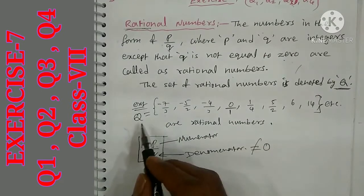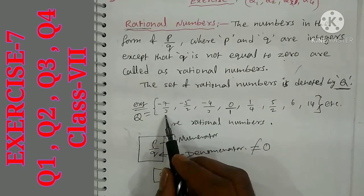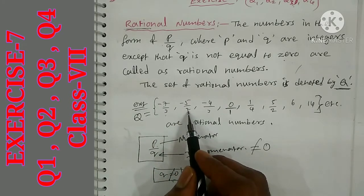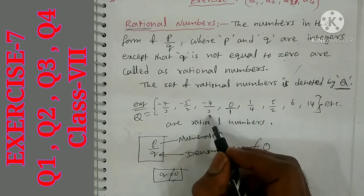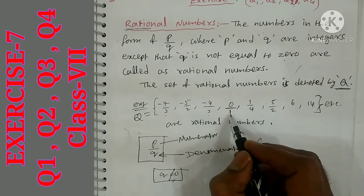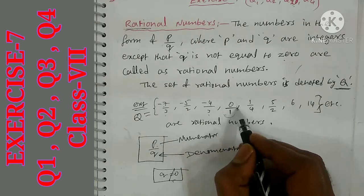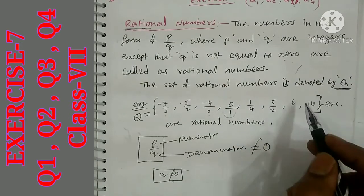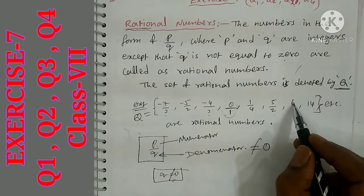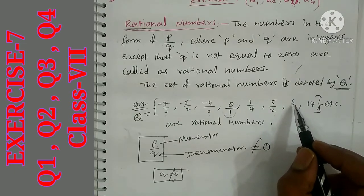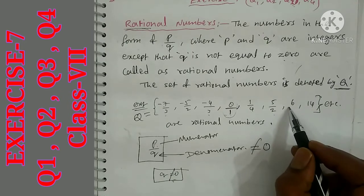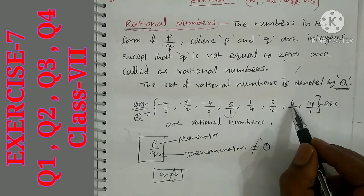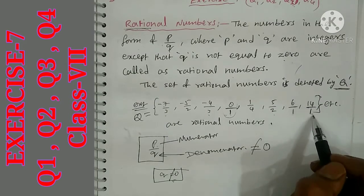This set is denoted by Q. For example, minus 7 by 3 is a rational number, minus 5 by 2 is a rational number because 2 is not 0. Minus 4 by 3 is also a rational number. 0 by 1 — so 0 is also a rational number because 1 is not 0. 1 by 4 is a rational number, 5 by 2 is a rational number. 6 is also a rational number because you can write it as 6 by 1, and 14 by 1.